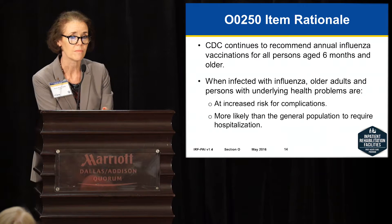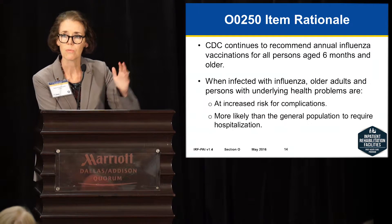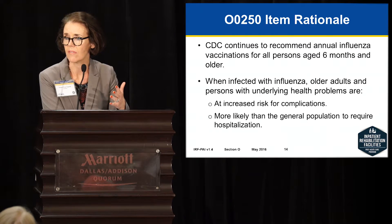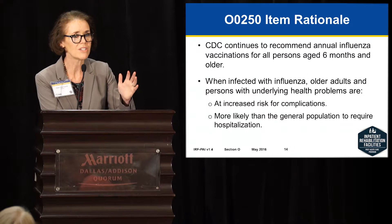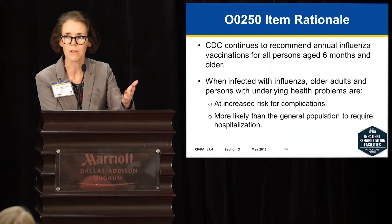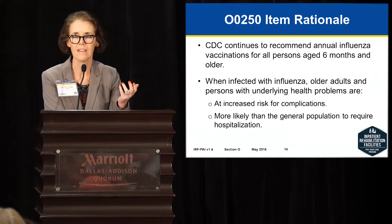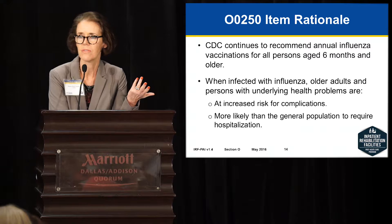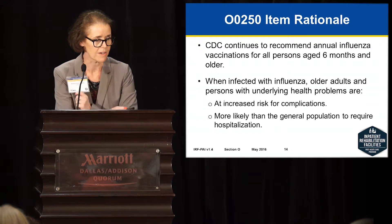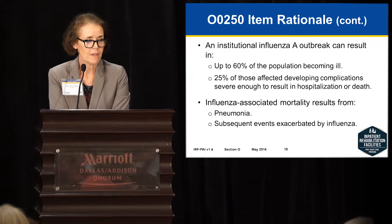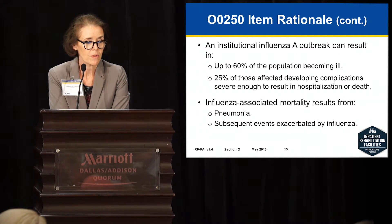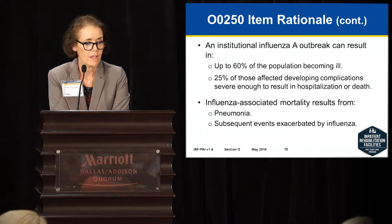While her situation seems very benign, it really impacted so many people in a way you don't think about — all my kids didn't get to see their grandmother for the whole month during semester break. So it's important. An influenza outbreak can result in up to 60% of the population becoming ill. We know that 25% of those people can develop pretty significant complications, and mortality rates result from pneumonia and other problems.